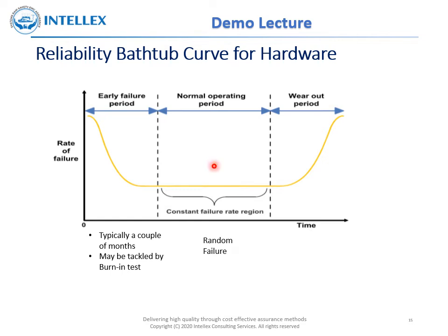The second period is the normal operating period, or the useful life span, which may extend to 5 or 10 years. Here, failures are due to random faults of the components and the failure rate is considered to be constant, which is evident from the flat nature of the curve. The third period is the wear out period, during which the failure rate increases rapidly due to wear and tear.